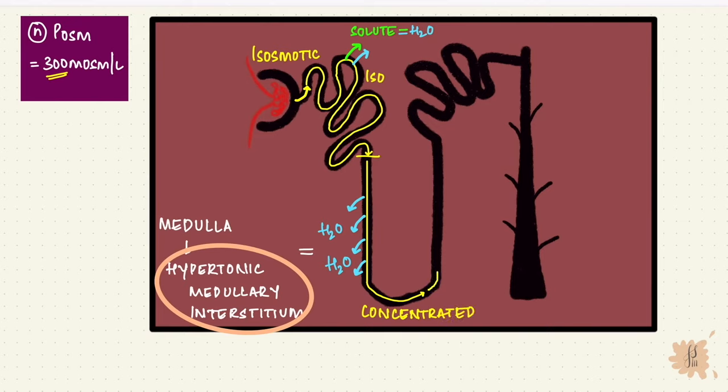Next, the ascending limb. This portion is impermeable to water, but reabsorbs solutes. So solute is being added to the medullary interstitium, while the nephron keeps water. So that increases the tonicity of the medulla, and thus the urine now is getting diluted.